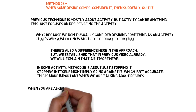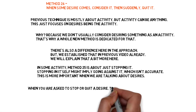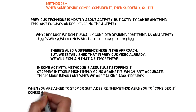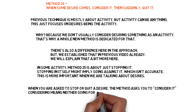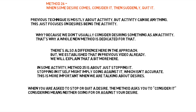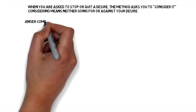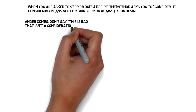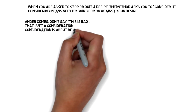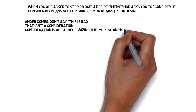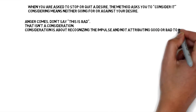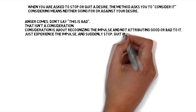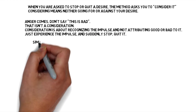When you're asked to stop or quit a desire, the method asks you to consider it. Considering means neither going for or against your desire. Anger comes — don't say this is bad. That isn't a consideration. Consideration is about recognizing the impulse and not attributing good or bad to it. Just experience the impulse and suddenly stop.